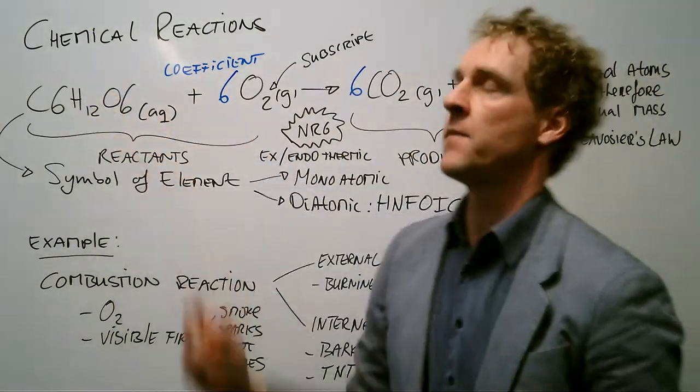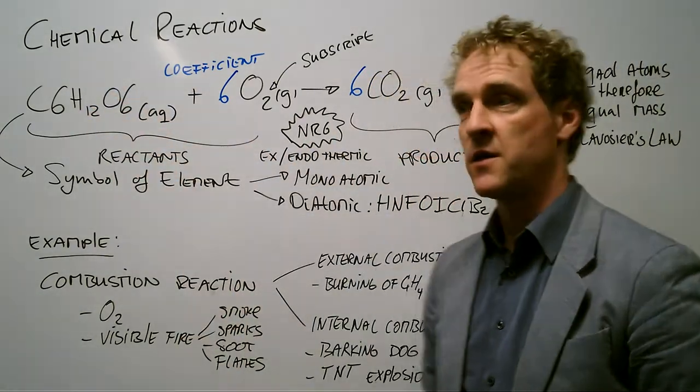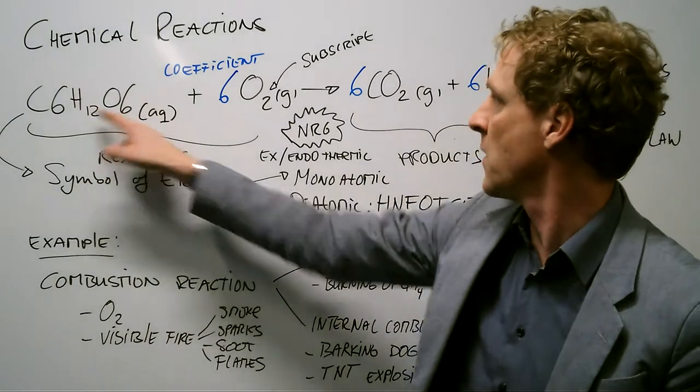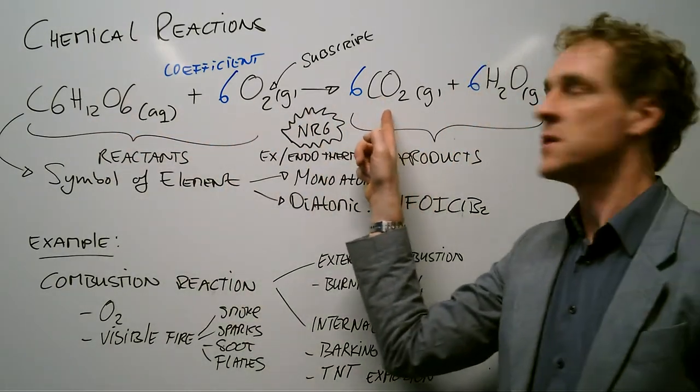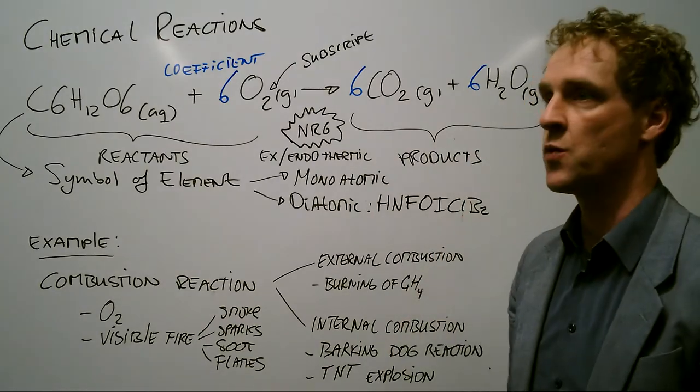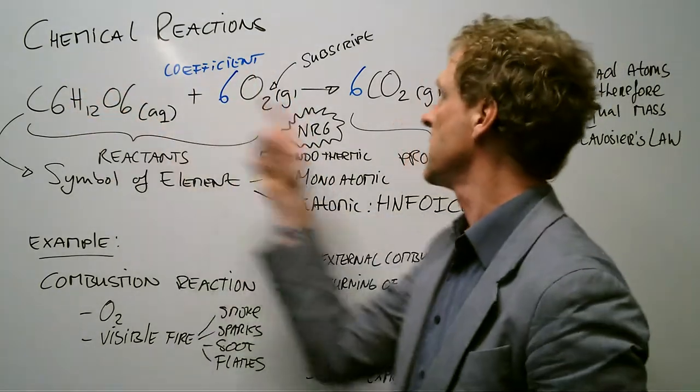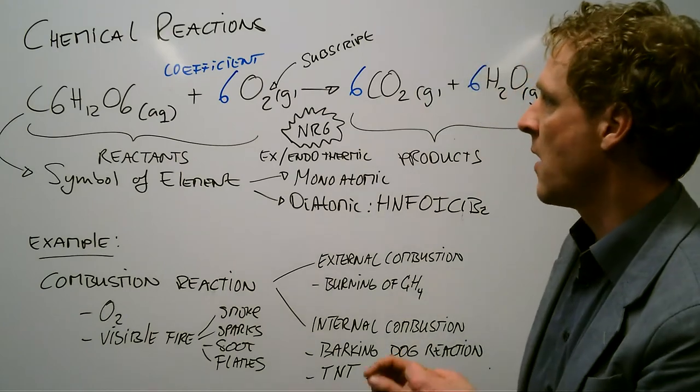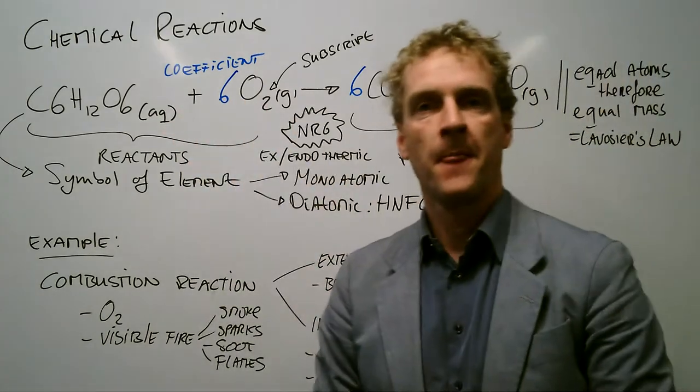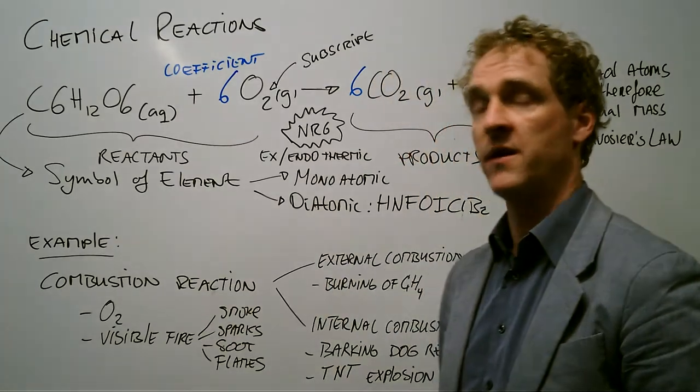This is the reaction I'll use as an example: glucose and oxygen produce CO2, carbon dioxide, and water. These are the reactants. On the right side of the arrow we find the products, and what we see is that we have different products than the reactants we started with.